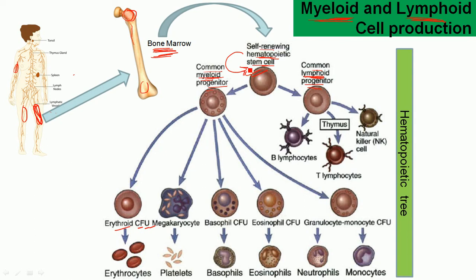After self-renewal, the hematopoietic stem cell can produce two different types of cell: the first is the common myeloid progenitor cell, and the second is the common lymphoid progenitor cell. 'Myeloid' means coming from the bone marrow.